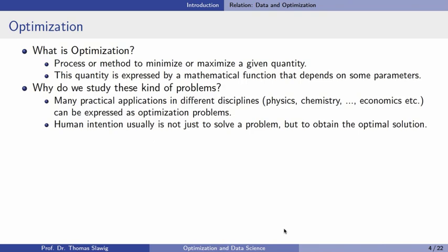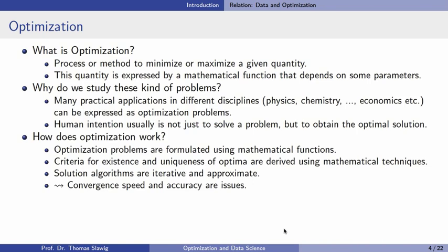Why do we study optimization problems? There is a variety of practical applications in many disciplines — physics, chemistry, biology, economics, and all kinds of scientific or technical disciplines — where problems can be described as optimization problems. We human beings are always looking not for just one solution, but for an optimal solution. Basically, human beings tend to optimize solutions, and this is the importance of optimization in general.